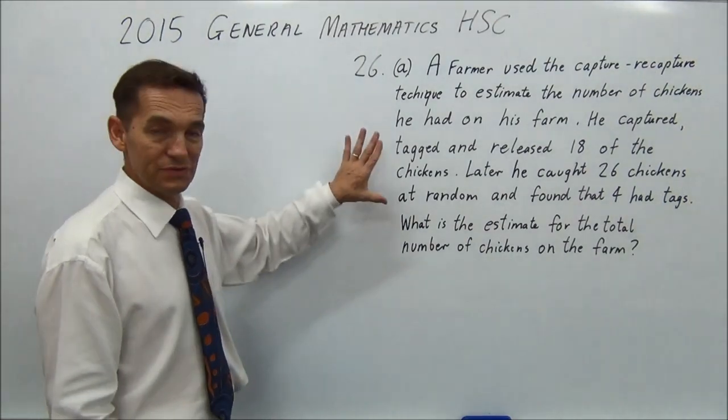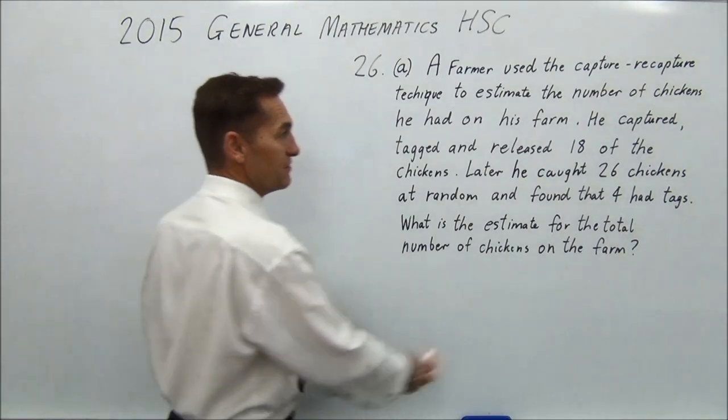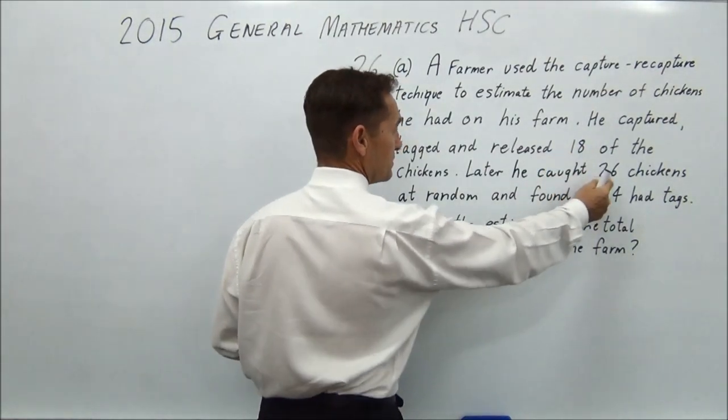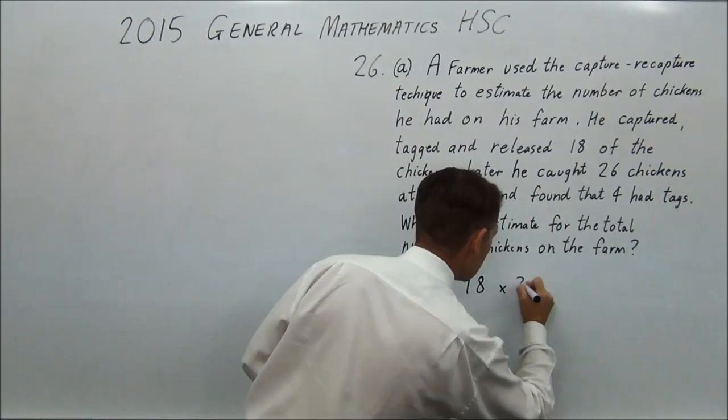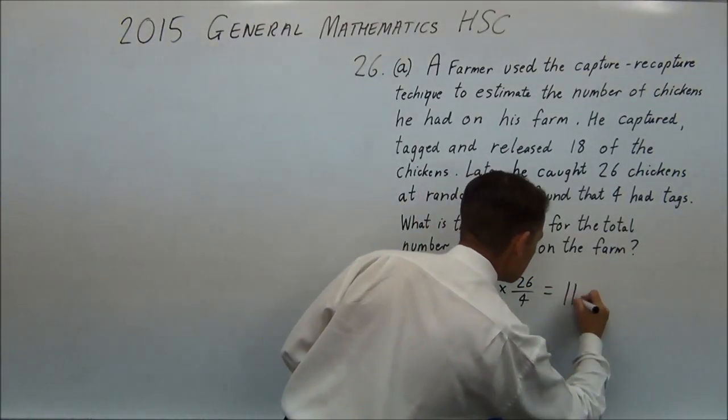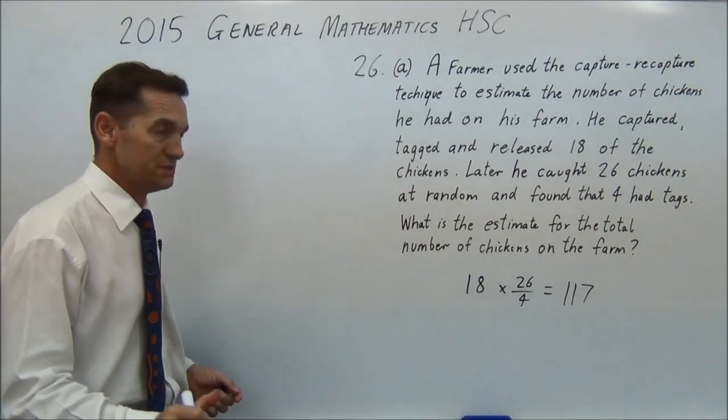Well if you know how to do capture-recapture, this is a cinch. You can just go, okay I've got 18, I want to multiply by 26 divided by 4. So you just go 18 multiplied by 26 on 4 equals 117. I've got 117 chickens and that's done. Pretty easy.